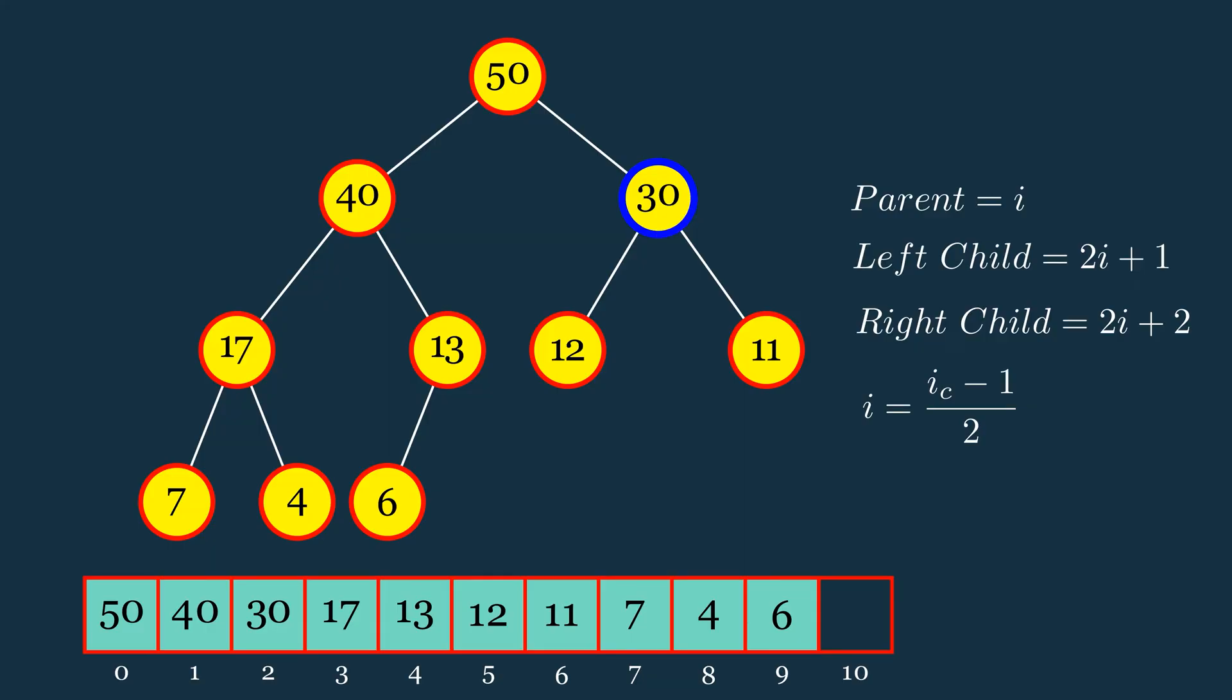For example, consider an element with the value 30 at index 2. To find its left child, we plug i equals 2 into the left child formula, which gives us index 5. So, index 5 is the left child of the element at index 2.